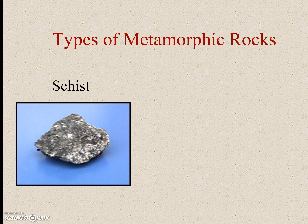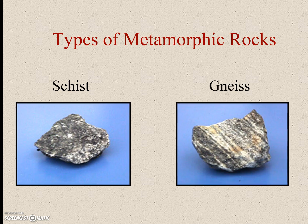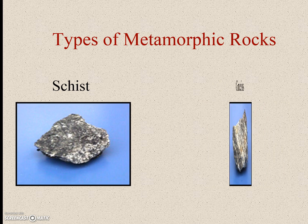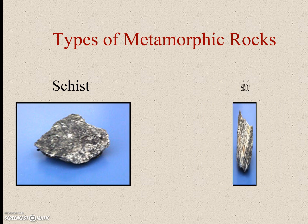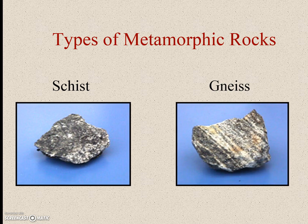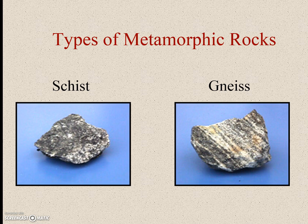Here are some types of metamorphic rocks that are good to be familiar with. One is schist. And also gneiss, which is not pronounced 'Guinness' — it is called 'nice.' This is the gneiss rock that has bands.